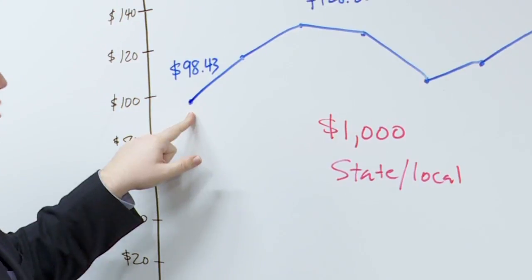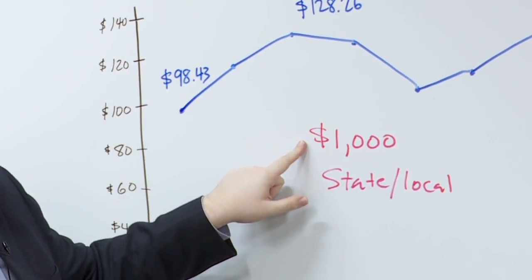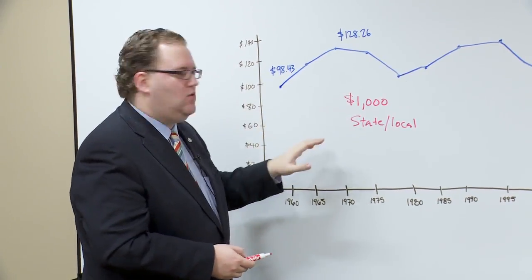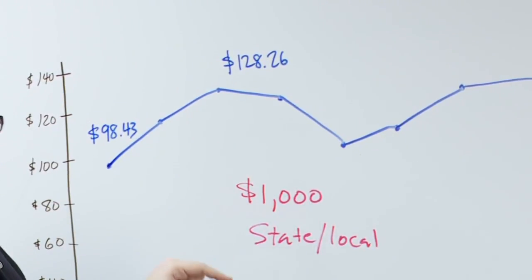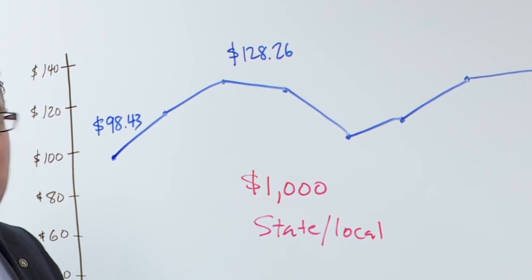In 1960, Washingtonians paid $98 per every thousand dollars that they earn to state and local taxes. It reaches a high in the 70s of $128 per thousand dollars of income we earn.